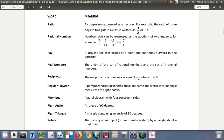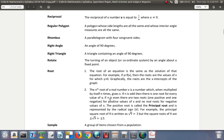Regular Polygon. A polygon whose side lengths are all the same and whose interior angle measures are all the same. Rhombus. A parallelogram with four congruent sides, same lengths. The sides are the same length. Right Angle. An angle of 90 degrees. Right Triangle. A triangle containing an angle of 90 degrees.